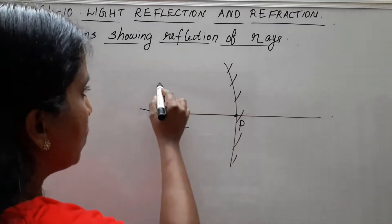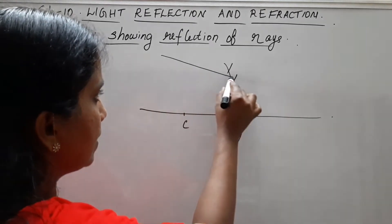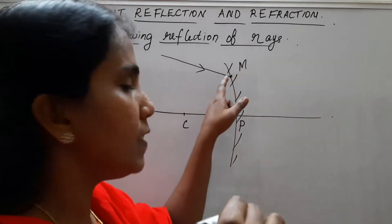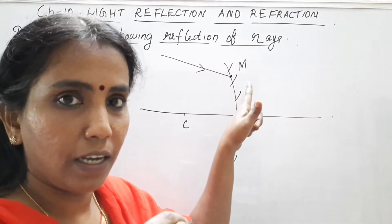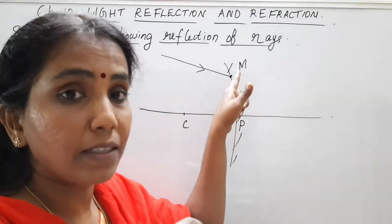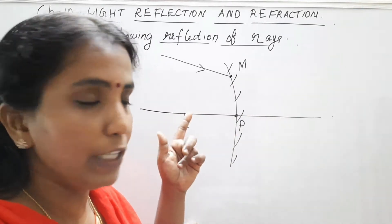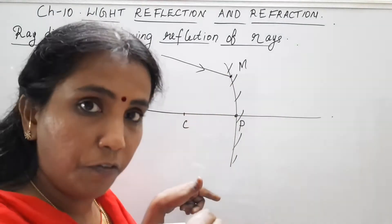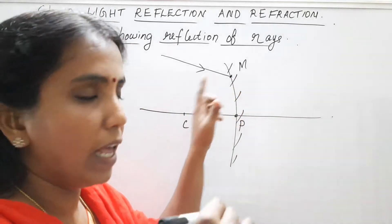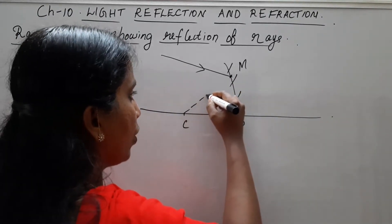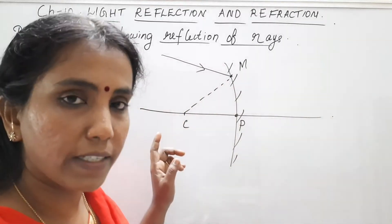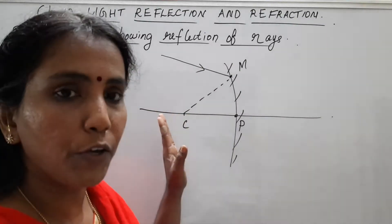Suppose you have an incident ray like this. This point, suppose I mark it as M, is called the point of incidence. You have to draw the normal at this point of incidence. Since the surface is a curved one, you have to join the center of curvature with the point of incidence. The line joining the center of curvature and the point of incidence is known as the normal.